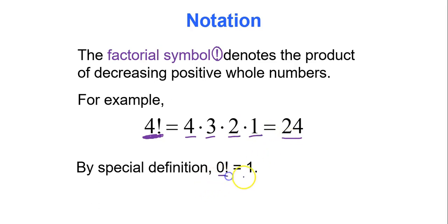And then by definition, 0 factorial is 1. Now that we know how factorials work, let's do some more counting principle rules.